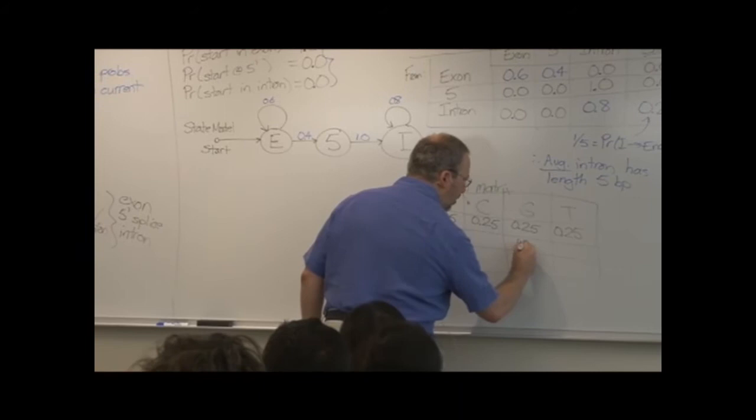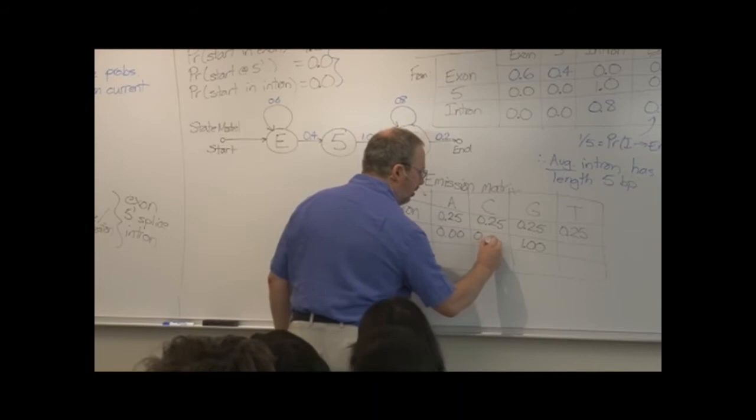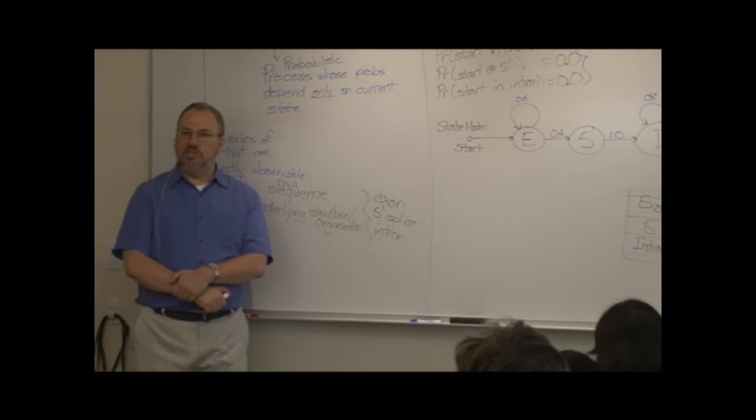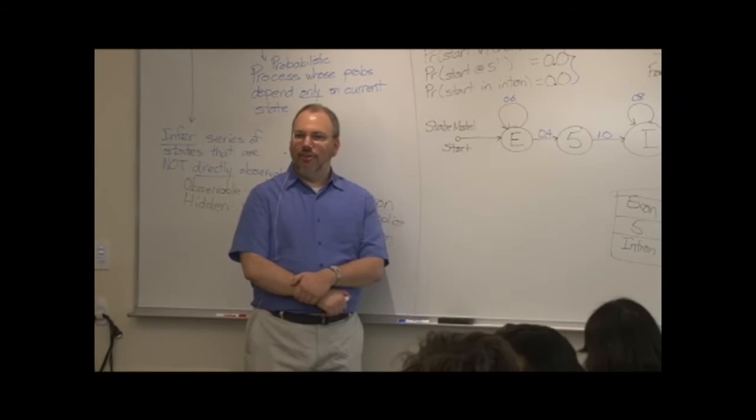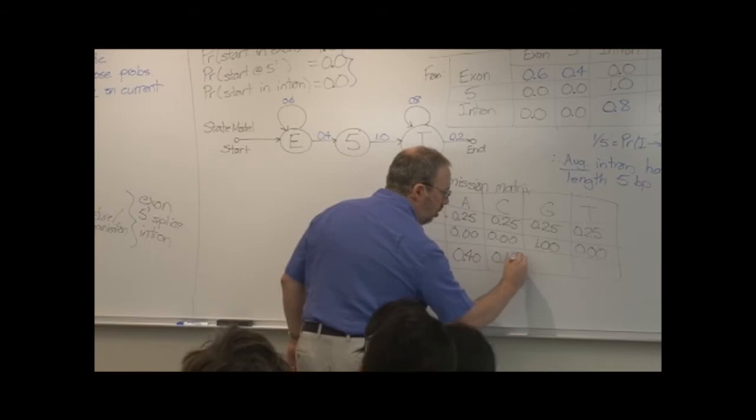Following Eddy, I'm going to assume that the splice site always occurs at a guanine. Again, not realistic, and later on we can relax that. How about in an intron? Are we going to have uniform base frequencies in an intron, or is there some kind of bias one way or the other? Introns are generally rich in adenine and thymine. So let's reflect that here.